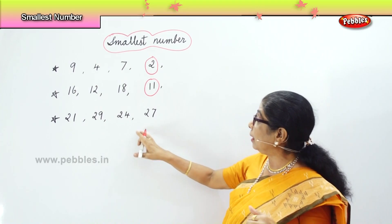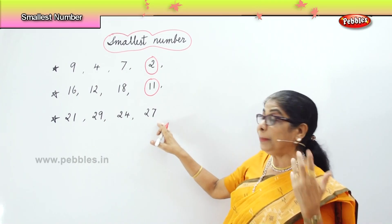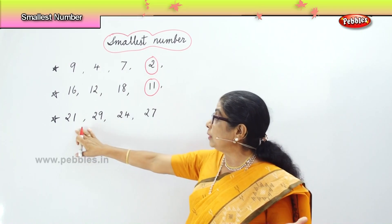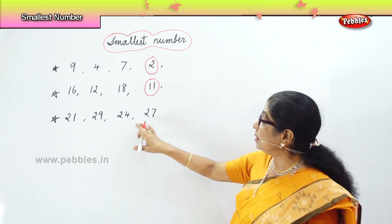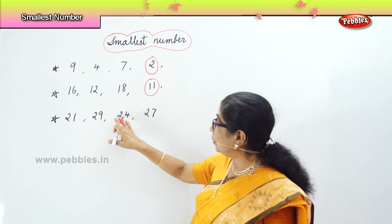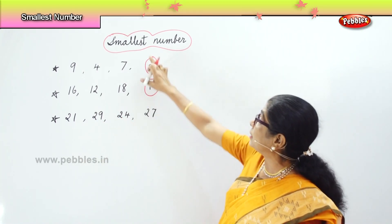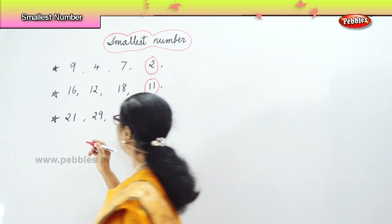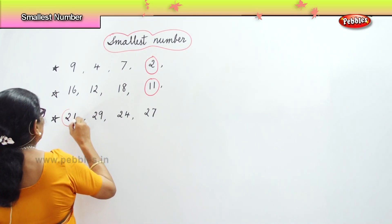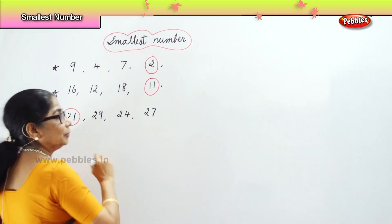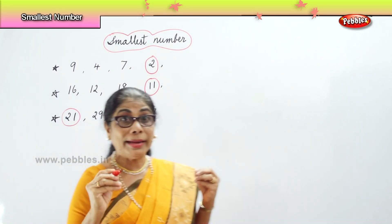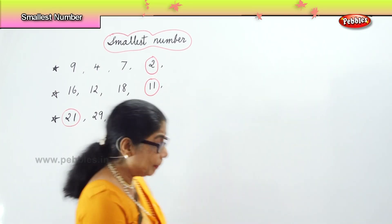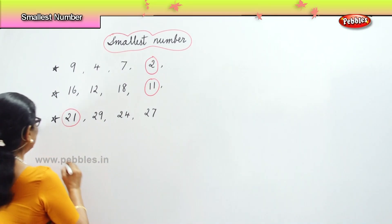24 is a little bigger, 27 a little bigger, and then bigger. So, which is the smallest in this row — 21, 29, 24, 27? The smallest number in the row is 21. Learn to identify the smallest among the numbers.